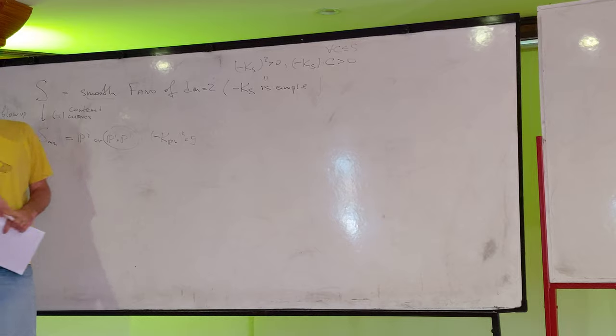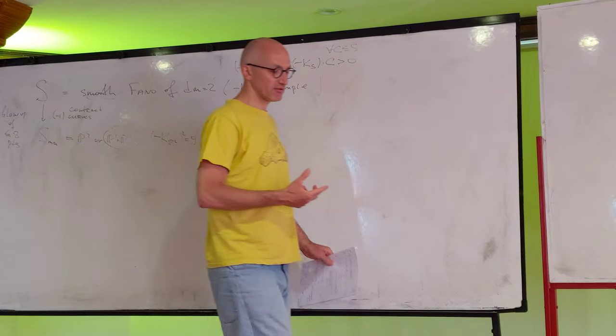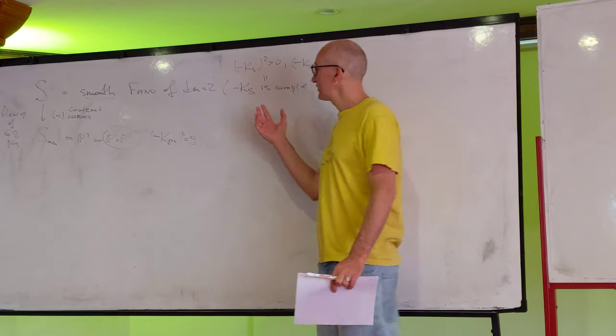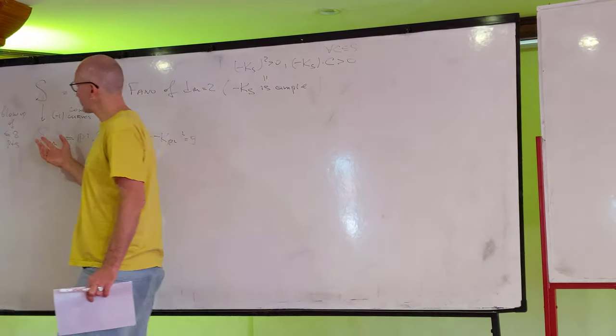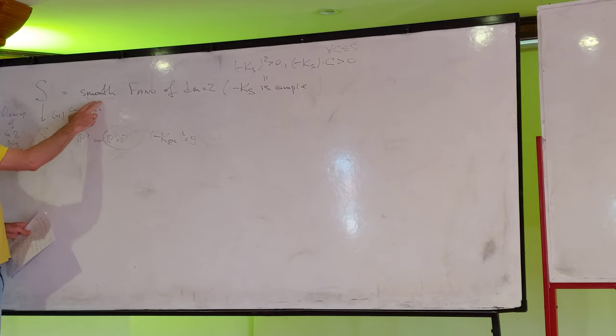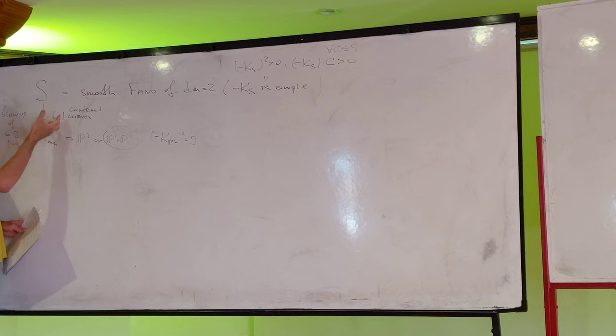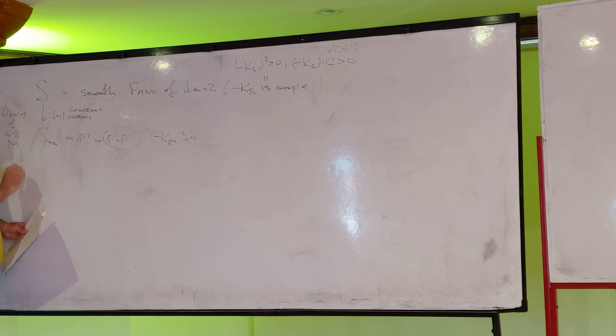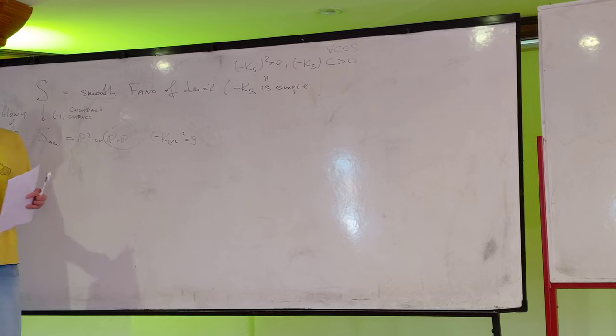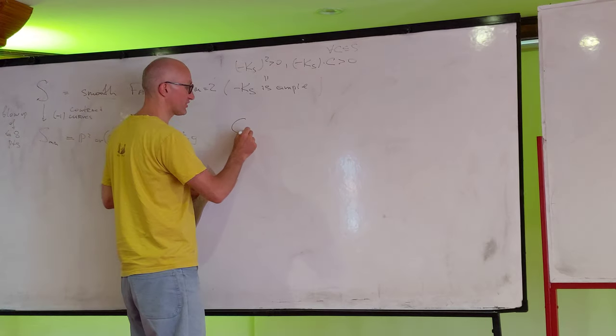So, one can ask, this approach, of course, it's very special. It's really used properties of everything here. Like, it's smooth, contraction of minus one curves, then classification of minimal del Pezzo surfaces without minus one curves. It's very rigid. So, one can ask, can we change this approach somehow, find a new proof that can be generalized to different cases. We want to generalize this.